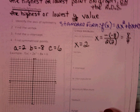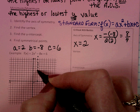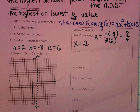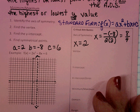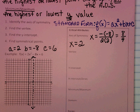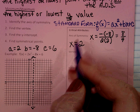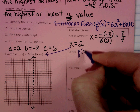Now I'm going to come over to my graph and find where x is 2, and draw a dotted line to represent the axis of symmetry — it's not part of the parabola, but it's a tool we need. The next step is to find the vertex, because we have to know how high or low to draw our parabola. Since the vertex is on the axis of symmetry at x equals 2, all we have to do is plug 2 in for x and find our y value.